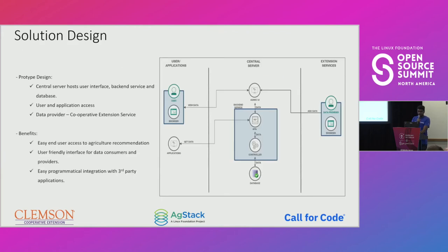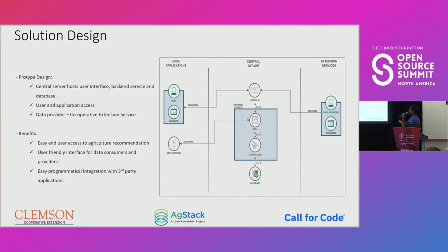We came up with a high-level architecture where we have a central server with a user interface, a back-end service, and a database. The user interface helps data providers add data easily, and on the other side users — farmers and day-to-day gardeners — can quickly access information through a user-friendly UI. We also wanted to provide APIs that could be publicly exposed to programmatically integrate into other applications that want to use this information to provide better recommendations. Benefits include easy access to recommendation information, easy third-party integration, and a friendly interface for both data consumers and providers.